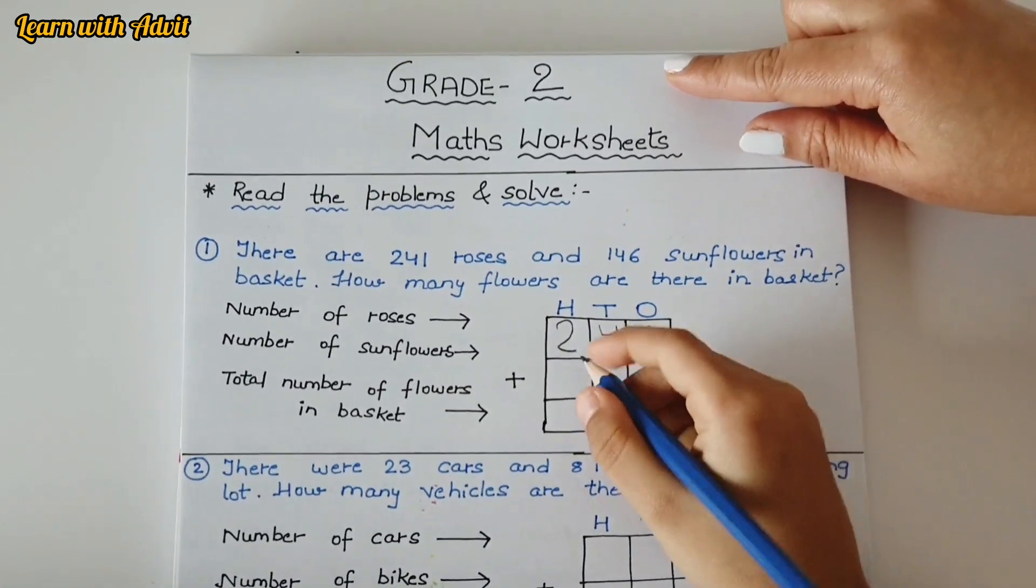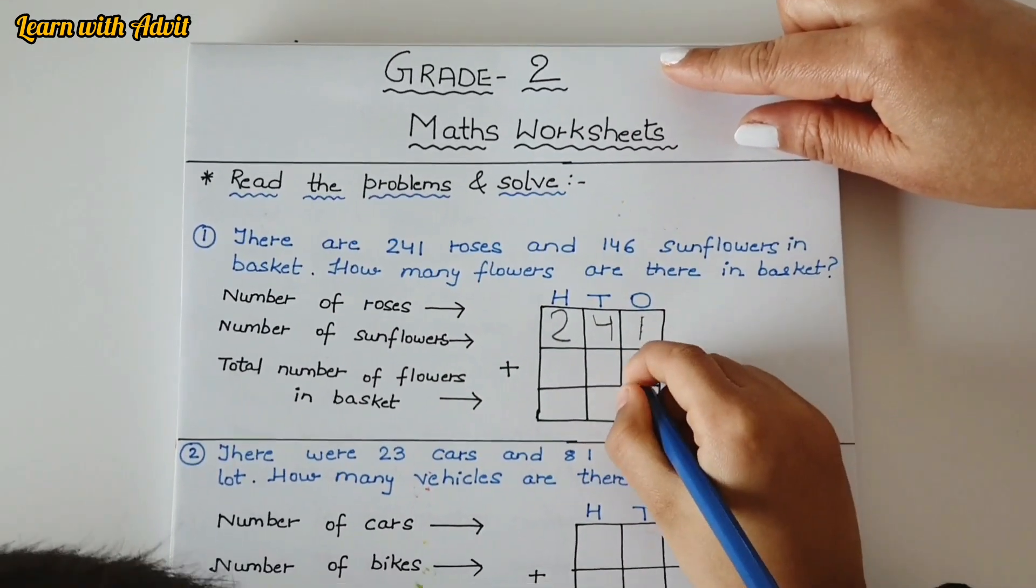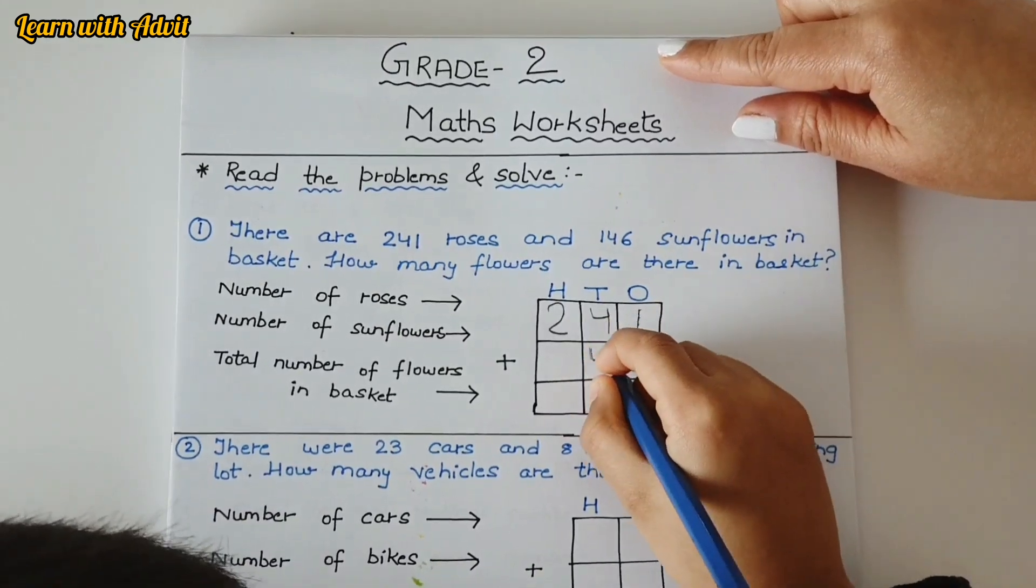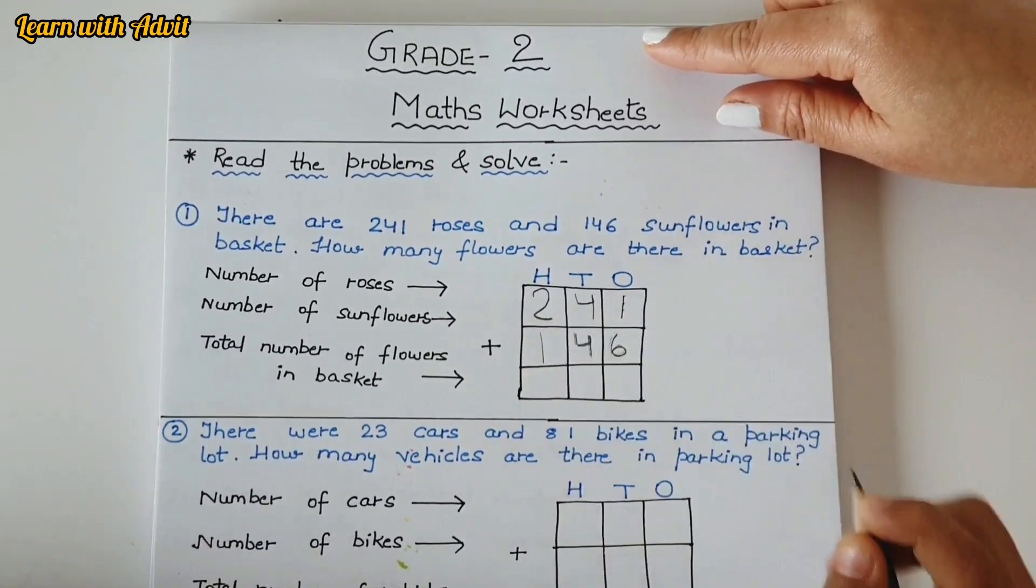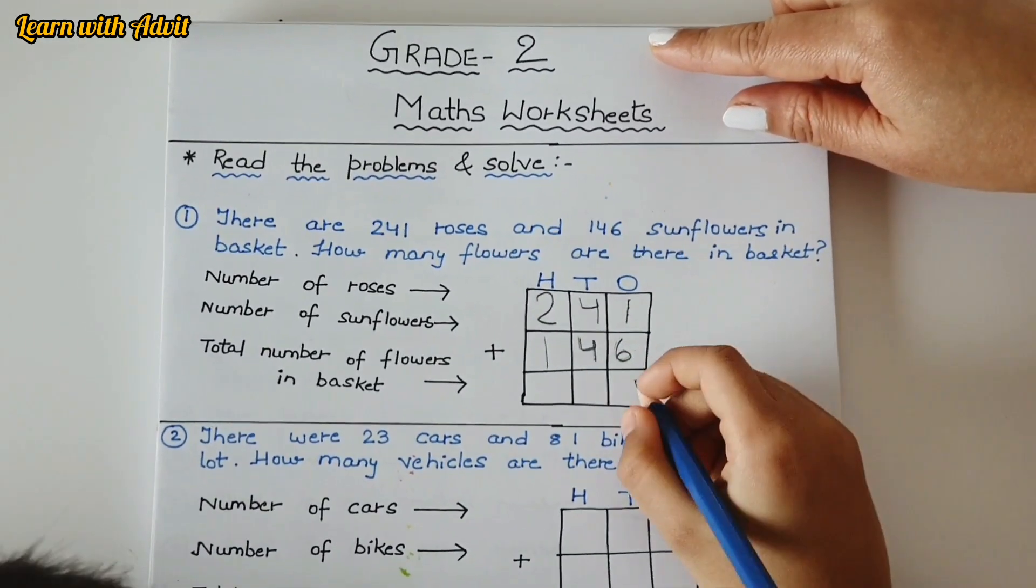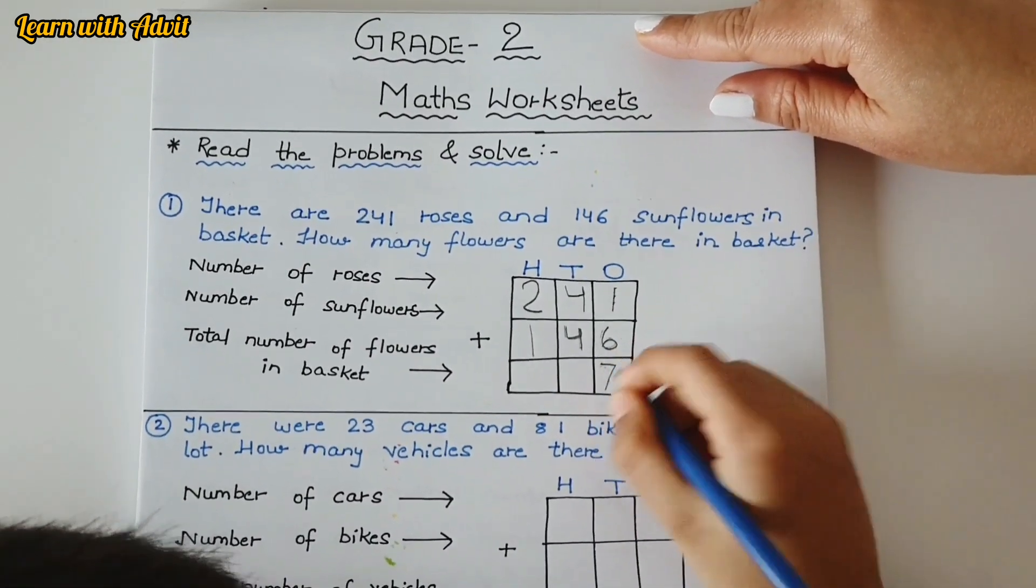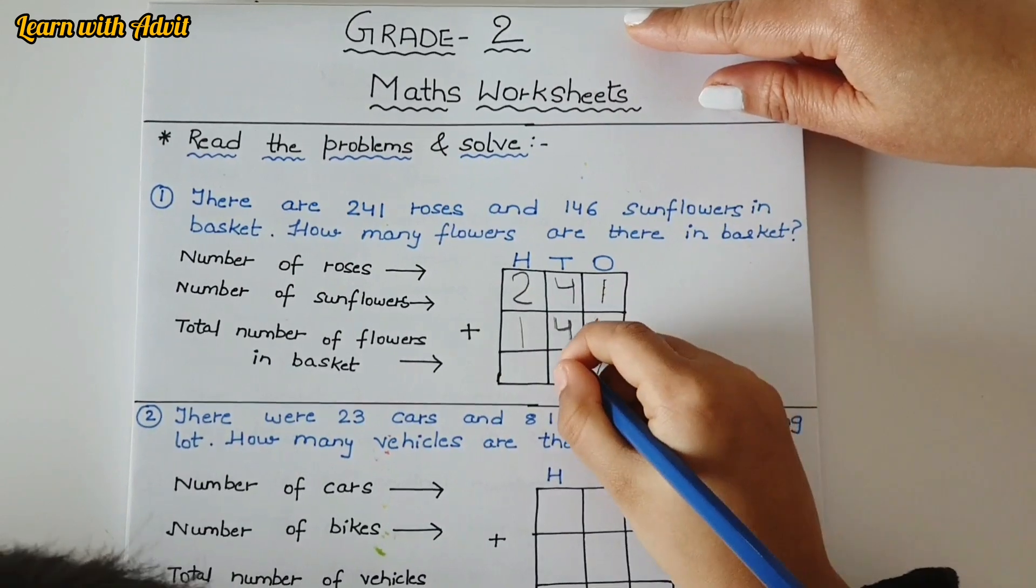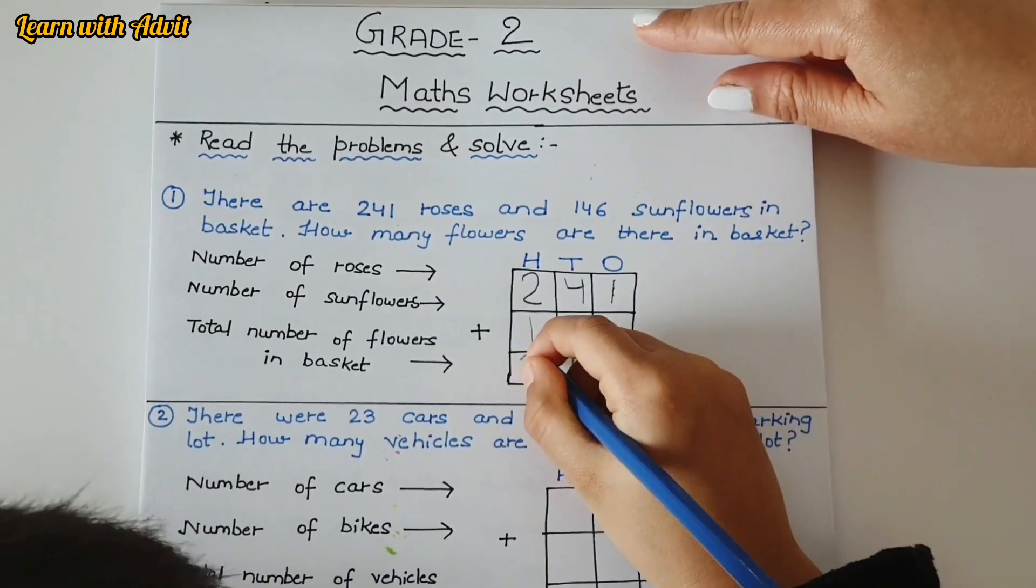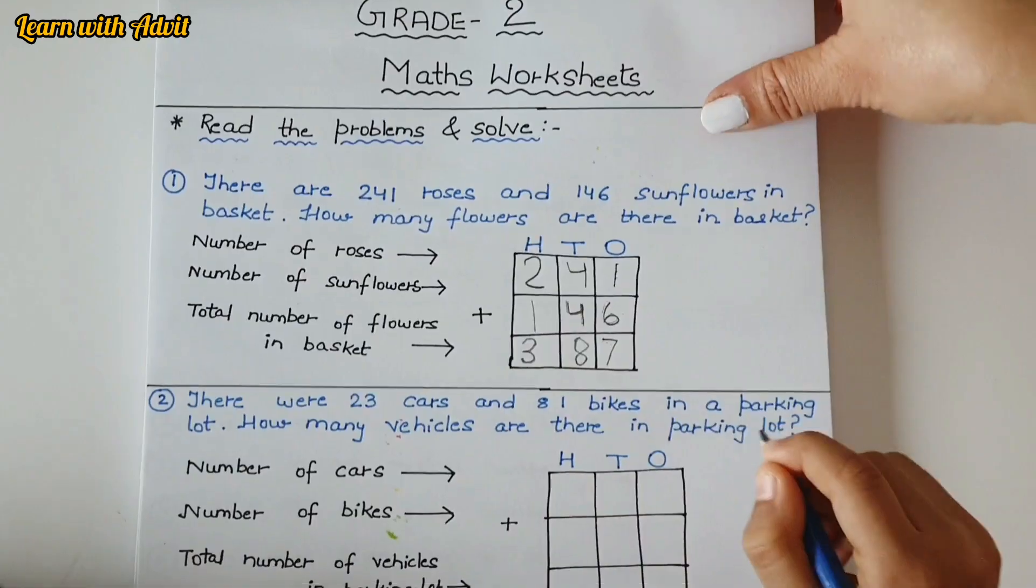So number of roses, write it down, start from ones, very good. Number of sunflowers, it's 146. Total number of flowers - add ones and tens and hundreds. It's easy to solve in the place value form.